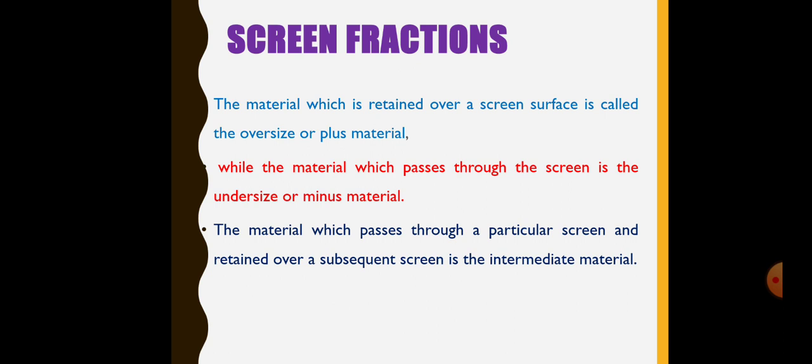Screen fractions. As we discussed a little bit in our previous slides, a single screen can make fractions into two. The material which is retained over the screen surface is called the oversize or plus material. While, the material which passes through the screen is the undersize or minus material.